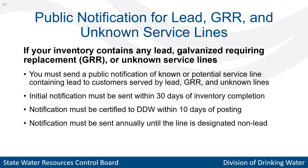If a system's inventory contains any lead, galvanized requiring replacement, or unknown service lines, they must submit a public notification for a known or potential service line containing lead. We have a template for this notification on our website. The first notification must be sent to persons served by those lines within 30 days of completing the inventory submission, must be certified to DDW within 10 days of being posted, and must be repeated annually until the service line is designated non-lead.